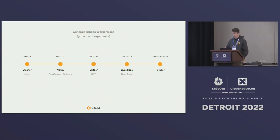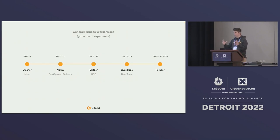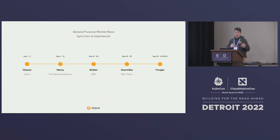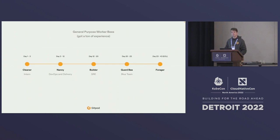Then they move into a sort of DevOps and delivery role, literally acting as nannies that feed other bees and help them out of their comb. After that, they become builders — the equivalent of an SRE — producing wax and standing up the infrastructure the rest of the hive runs on. Following that, they move to the blue team, standing guard at the entrance to prevent bad actors from entering the hive.